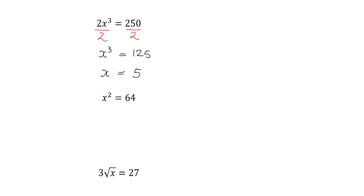What about the next one? x squared is 64. What's the inverse of squaring? It is square rooting. So what we have to do to figure out what x is, is take the square root. And what we'll get is that x is equal to 8. But there's a little trick that goes on with square roots, because square rooting is not completely giving us the full answer.